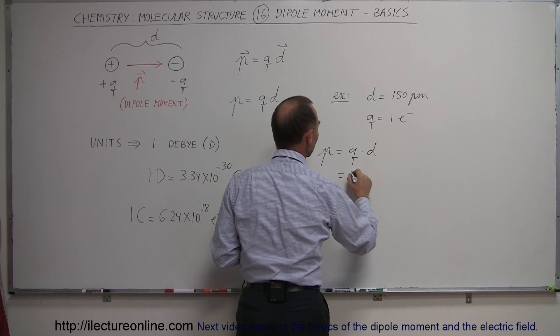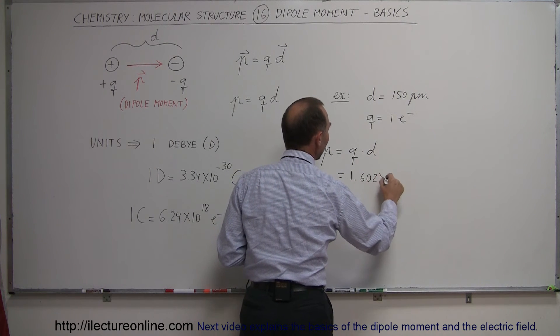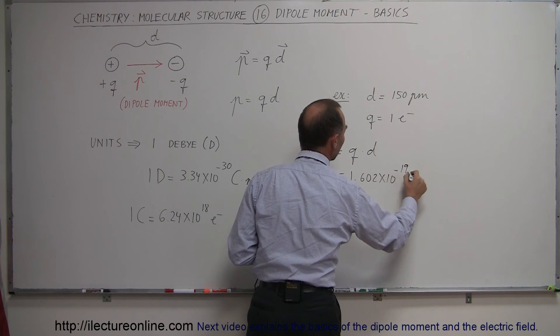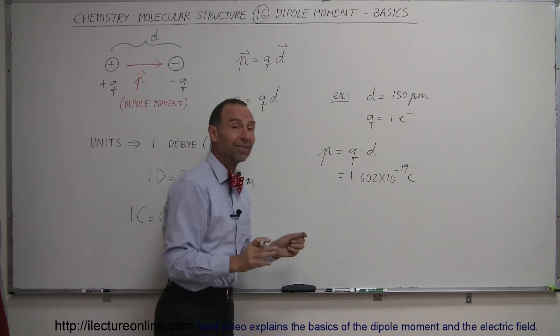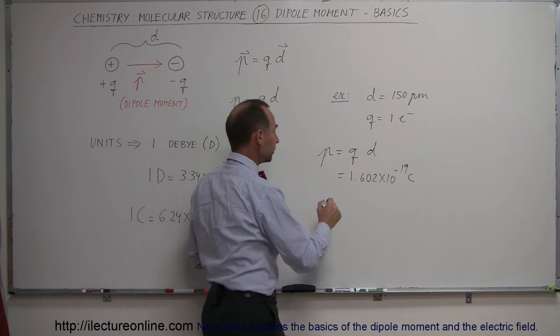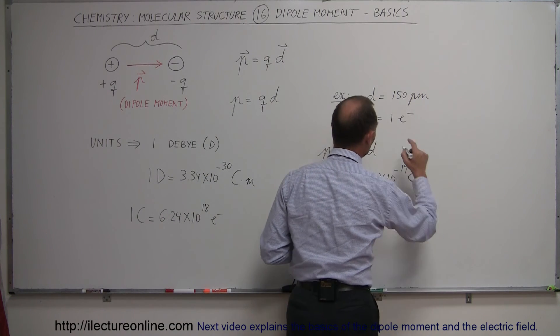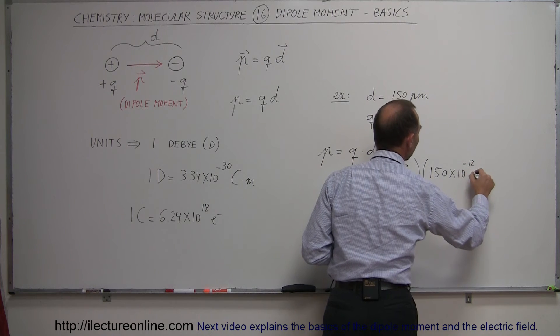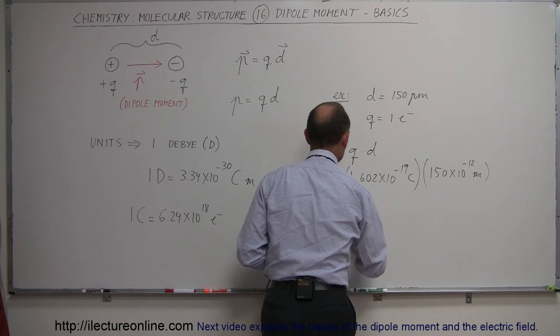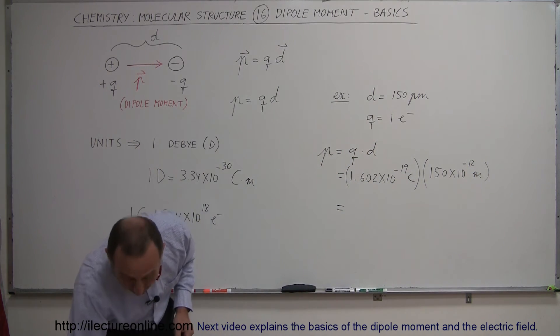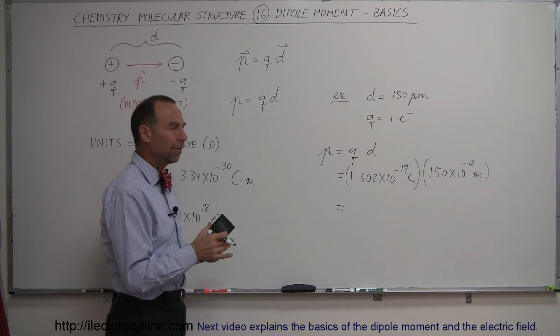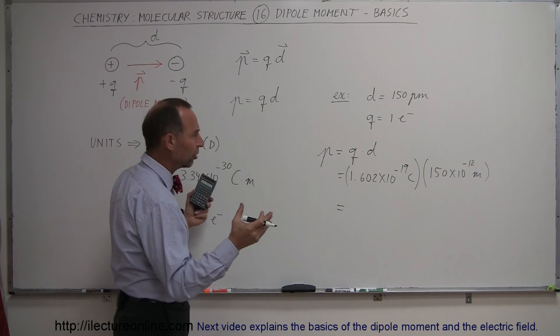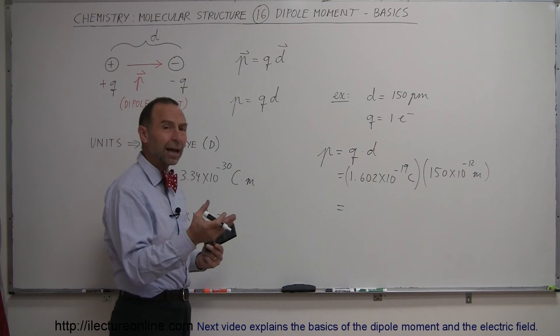Q would be one electron which is 1.602 times 10 to the minus 19 coulombs. So one electron has that much charge. You multiply that times the separation distance of 150 times 10 to the minus 12 meters, and that will then give you the magnitude of that dipole moment. So you should be able to calculate, given the charge and given the separation distance, you should be able to figure out the dipole moment.